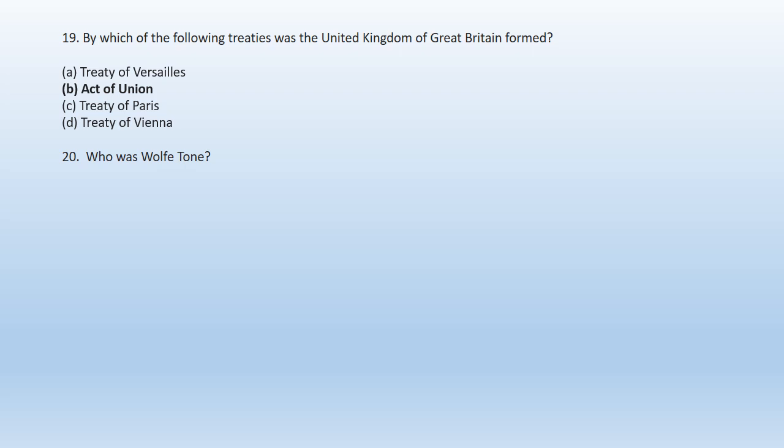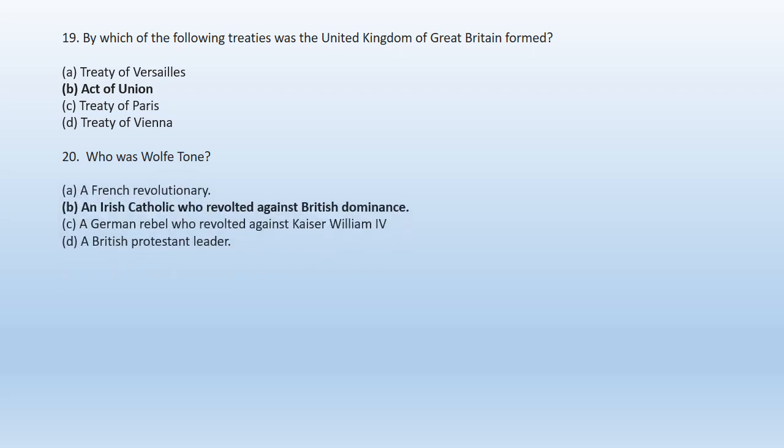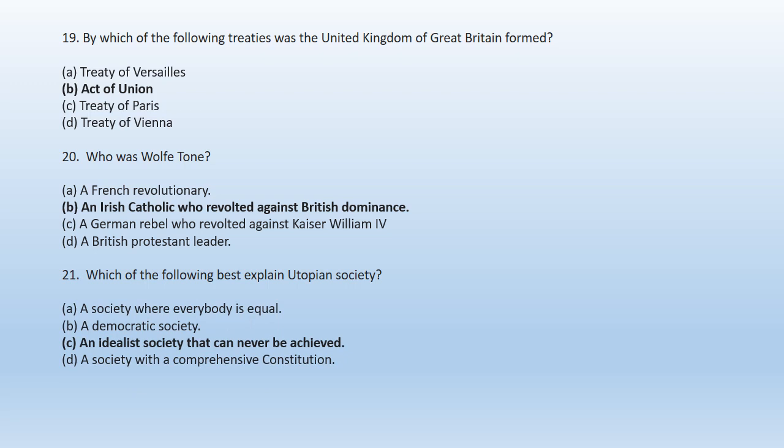Question 20: Who was Wolfe Tone? A. A French Revolutionary, B. An Irish Catholic who revolted against British dominance, C. A German rebel who revolted against Kaiser William Ford, D. A British Protestant leader. B is the right answer — Wolfe Tone was an Irish Catholic who revolted against British dominance. Question 21: Which of the following best explains utopian society? A. A society where everybody is equal, B. A democratic society, C. An idealist society that can never be achieved, D. A society with a comprehensive constitution. Option C — an idealist society that can never be achieved — best explains the utopian society.